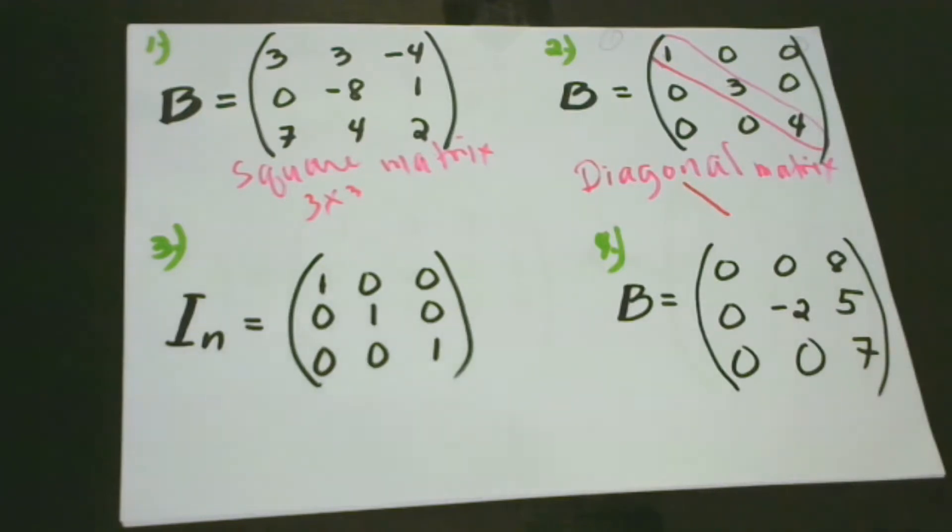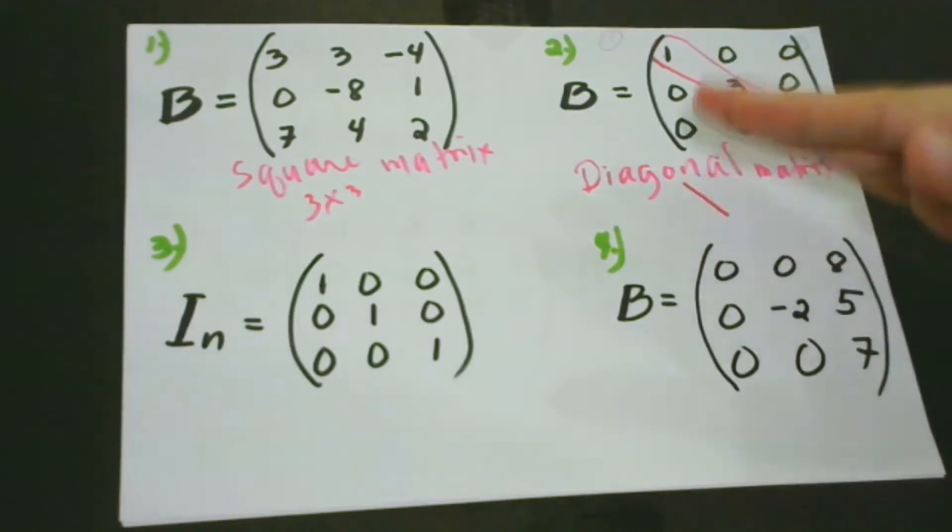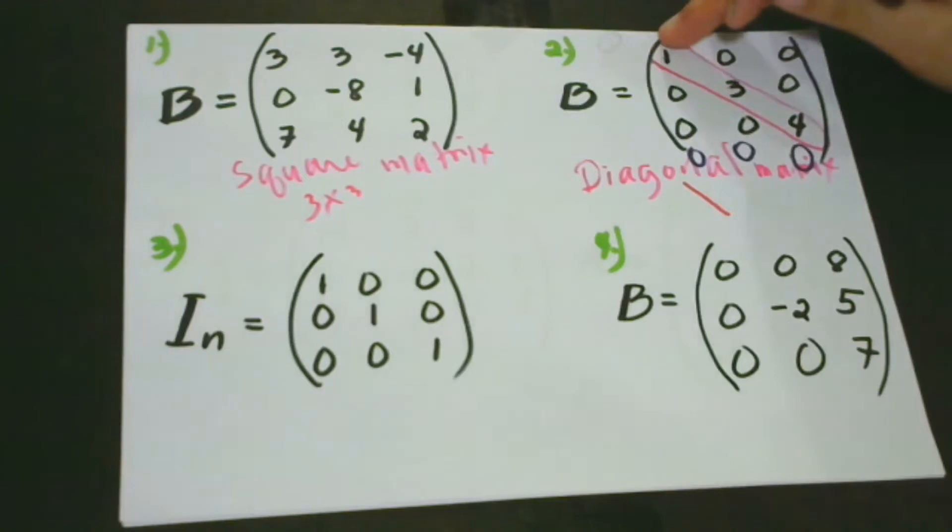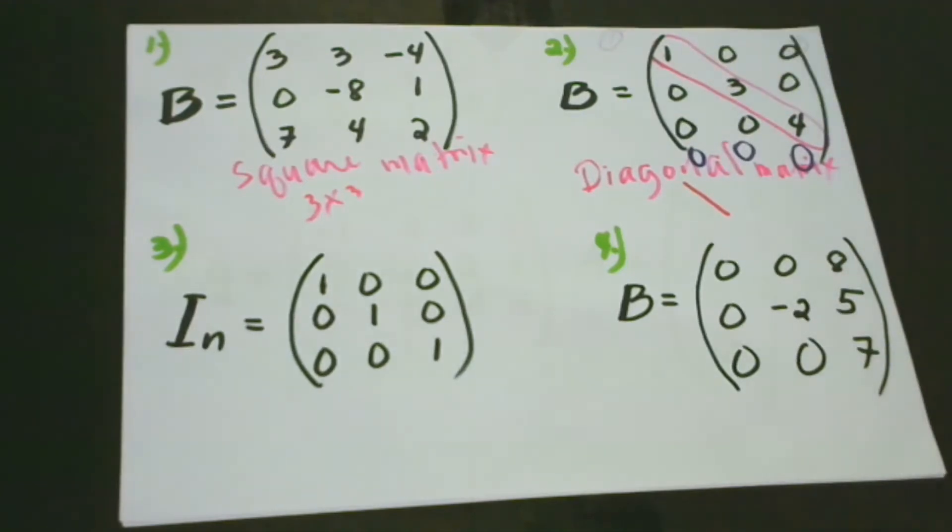Maybe you would ask me, is it always a square matrix when we talk about a diagonal matrix? This question really makes sense. Of course, not all diagonal matrices are square matrix. It is possible to make a rectangular matrix. For example, we can add here 0, 0, and then 0.